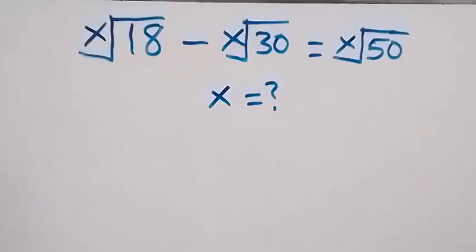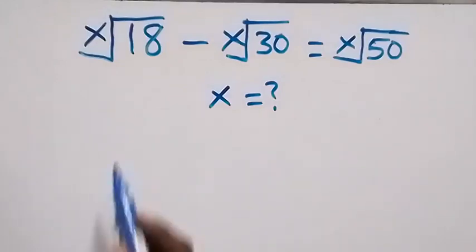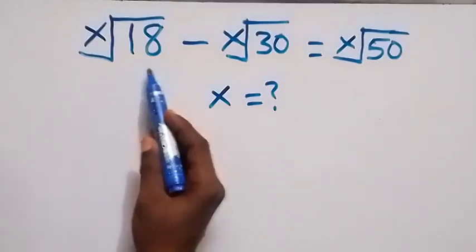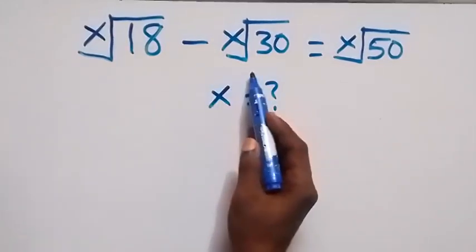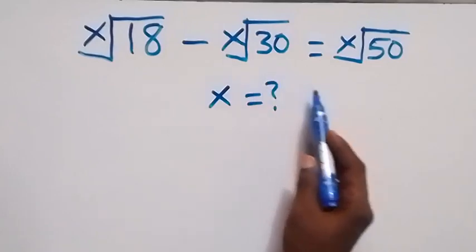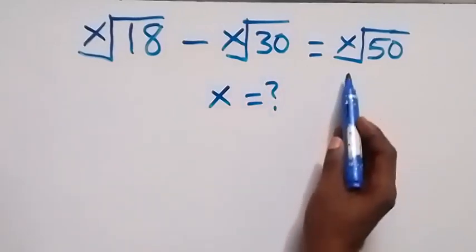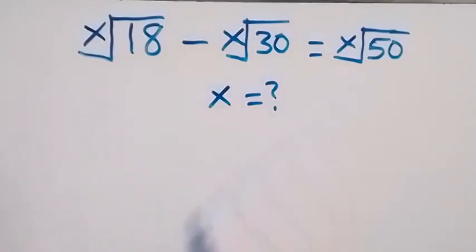Hello, you are welcome here. We are going to solve this nice algebra equation. We have x root of 18 minus x root of 30 equals to x root of 50.